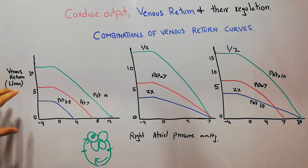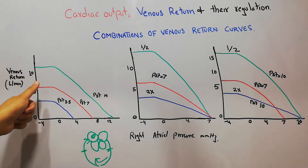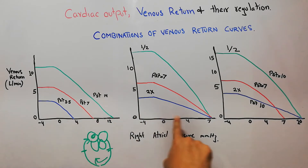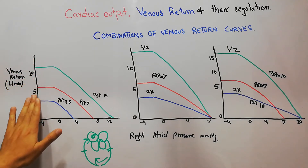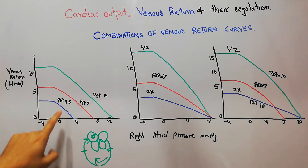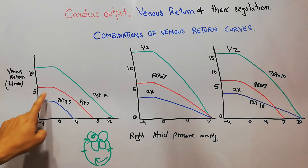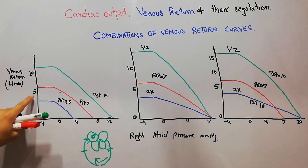First, we are going to see the effect of mean systemic filling pressure on the venous return curve. In our first graph, the normal venous return curve is shown with right atrial pressure on the x-axis and venous return on the y-axis. In a normal human being, at a normal right atrial pressure of 0 mmHg, the venous return is around five liters per minute.